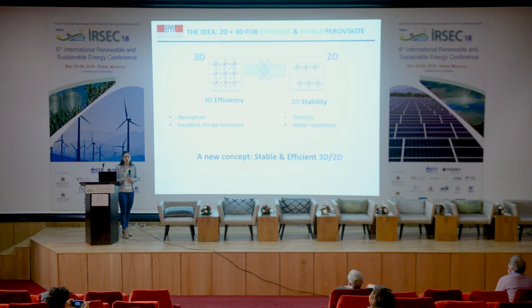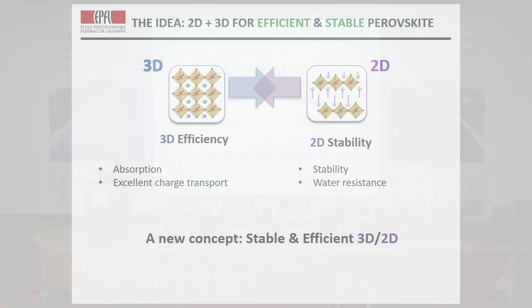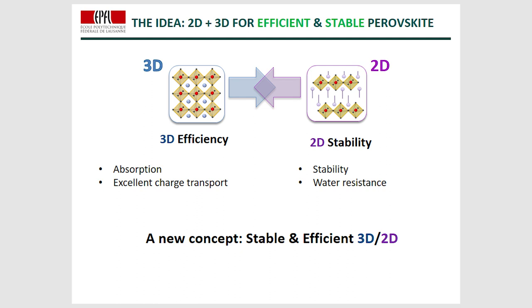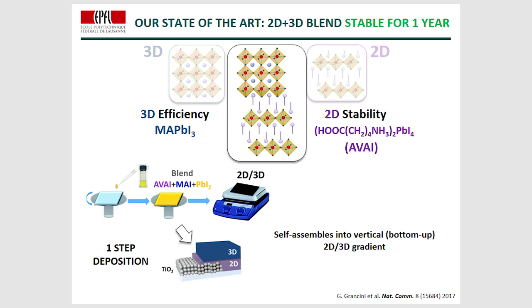The good idea would be to combine the 3D and 2D perovskite so that in a single device we could have the efficiency provided by the 3D perovskite and the stability of the 2D. So we have here a new concept of a stable and efficient 3D-2D perovskite. In our group, this study was done combining the well-known methyl ammonium lead iodide 3D perovskite with a 2D perovskite based on a bis-ammonium organic cation lead iodide. In only one deposition step, it was possible to form a thin film, and after optical characterization it was proven that there is a self-assembling bottom-up 2D-3D gradient in the devices.